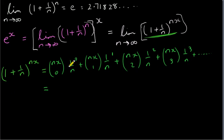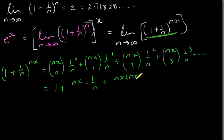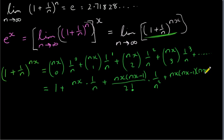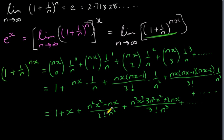Applying the binomial theorem: the first term is 1. The next term is nx choose 1 times (1/n), which is nx · (1/n) = x. Then nx choose 2 times (1/n)^2: that's (nx)(nx−1) over 2! times 1/n². Then nx choose 3 times (1/n)^3: that's (nx)(nx−1)(nx−2) over 3! times 1/n³, and so on.